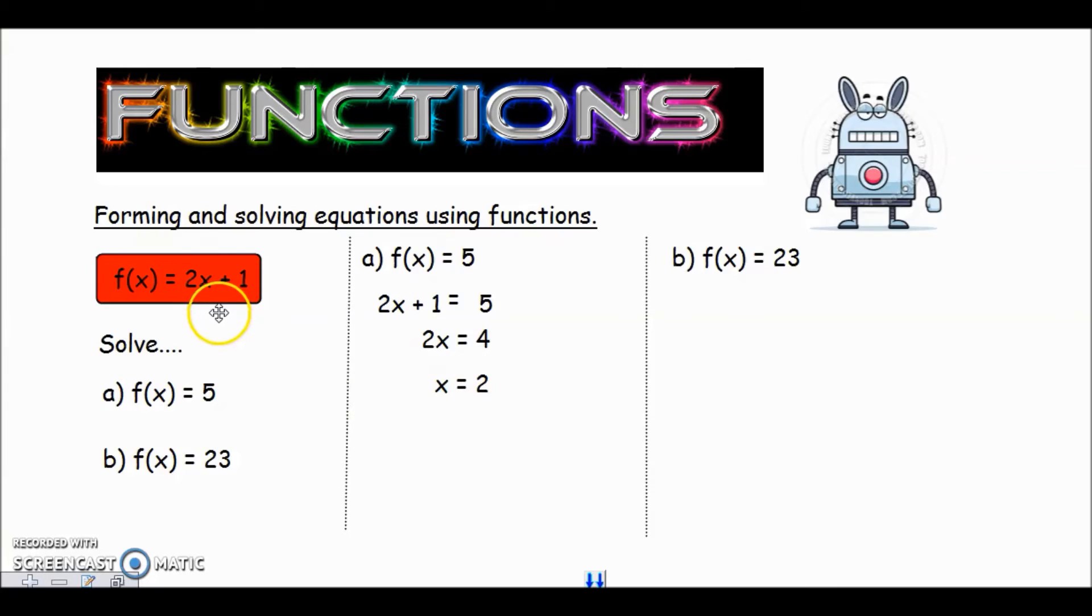That tells me what value for x we would put into our function to get 5. Let's just double-check it. So the x value apparently is going to be 2. Put 2 in place of x: 2 times 2 is 4 plus 1, yes that does equal 5, so we know that answer is correct.